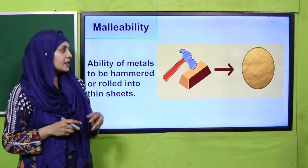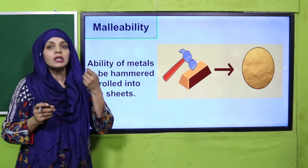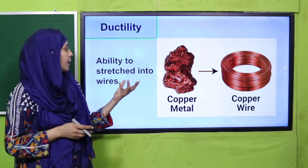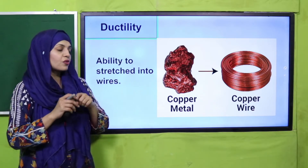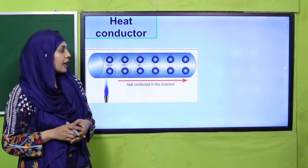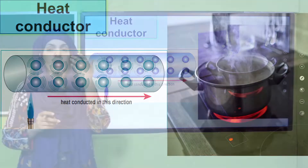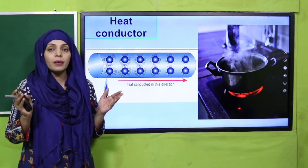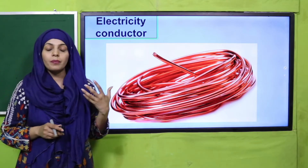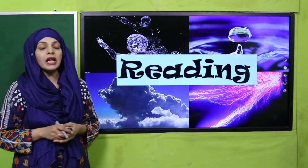Malleability is the ability of metals to be hammered or rolled into thin sheets — in ko hammer karke thin sheets mein change kiya ja sakta hai. Ductility is the ability to stretch metals into wires — thin wires mein change kiya ja sakta hai. Metals can also conduct heat; cooking pots are made of iron or aluminium so they conduct heat well and cook food. Metals are also conductors of electricity — copper is a very good conductor of electricity.